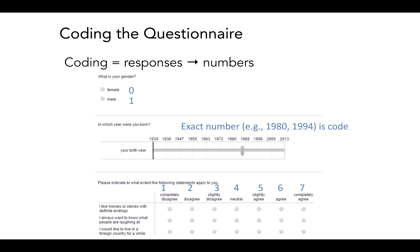For the second statement, I always want to know what people are laughing at, you would adopt that same structure of coding. So you would again start at one, then two, three, four, five, six, seven. So it's not like you start at eight, nine, 10 and so on. No, just start back at one. So because each of these statements will be considered a separate variable in your questionnaire, even though it looks like one question in your survey, it will show up as separate variables for each of these statements.